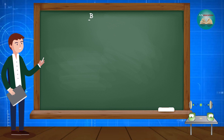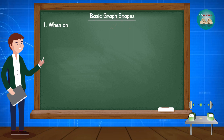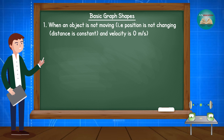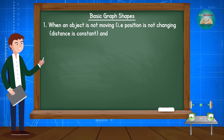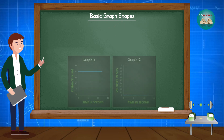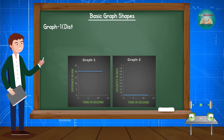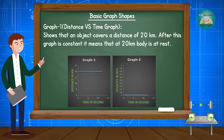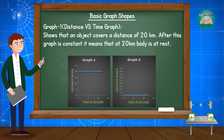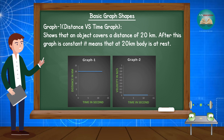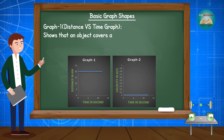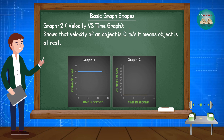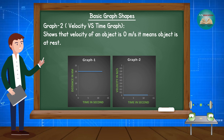Let's start with basic graph shapes. First, when an object is not moving — position is not changing, distance is constant, and velocity is 0 m/s. The distance-time graph shows the object at a constant distance of 20 km, meaning the body is at rest. The velocity-time graph shows velocity at 0 m/s, confirming the object is at rest.